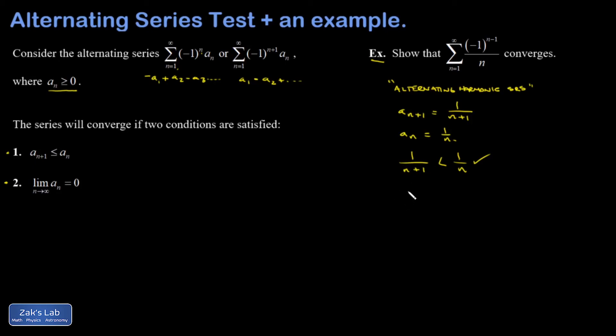Then we look at the limit condition. The limit as n goes to infinity of an, and that is unambiguously 0. So we've satisfied both conditions, and our series converges.